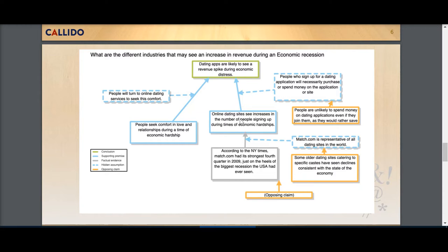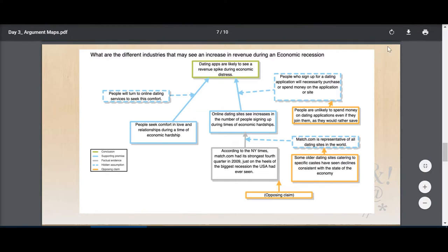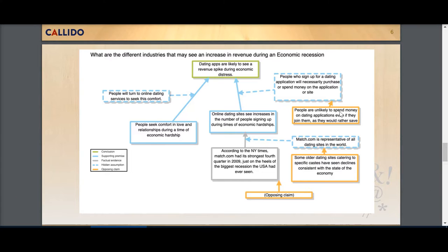I then have these blue boxes which are my premises. These are the premises which lead me to my conclusion. The gray boxes are factual evidence that back up the premises. Everything in orange is an opposing claim, something that opposes the view I've put forward, and these blue dashed lines are unstated or hidden premises.